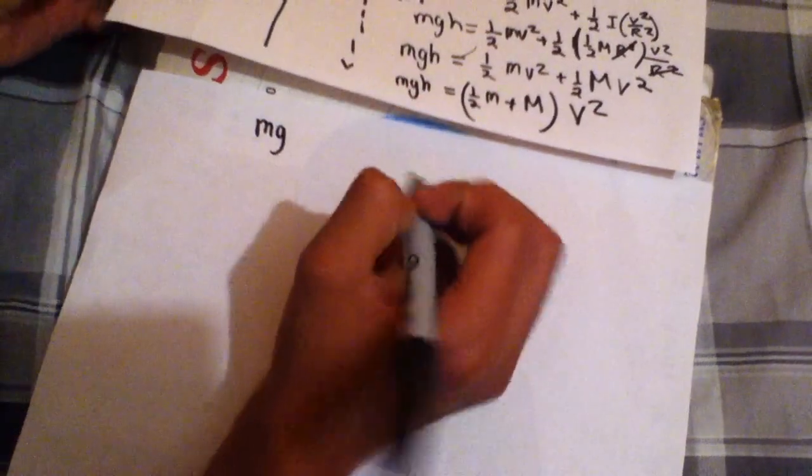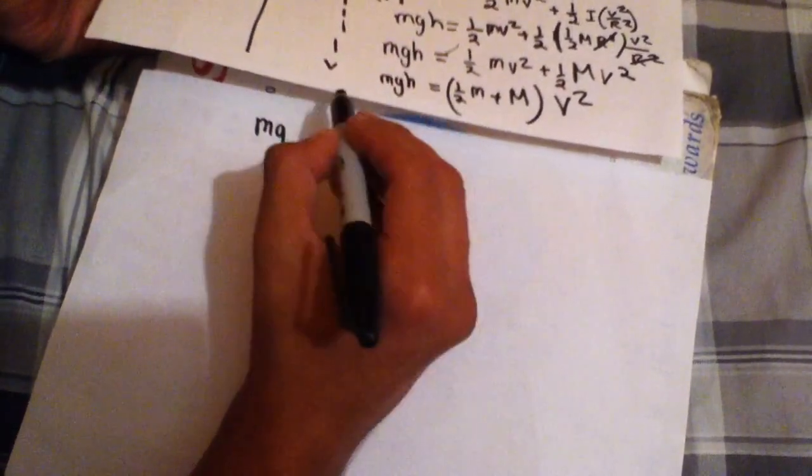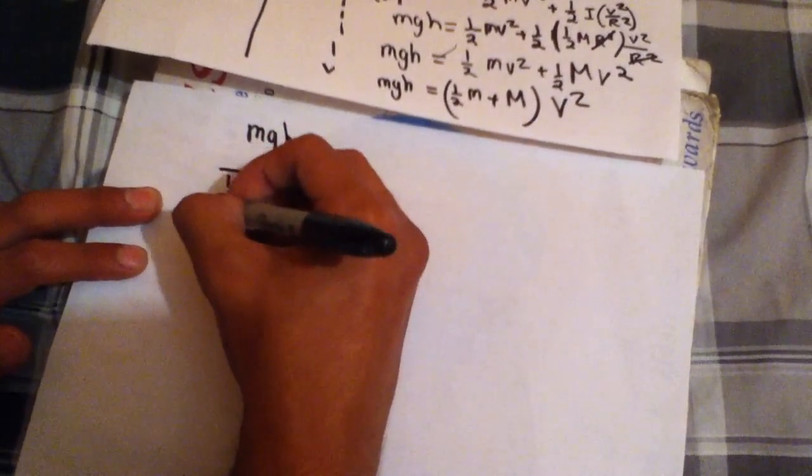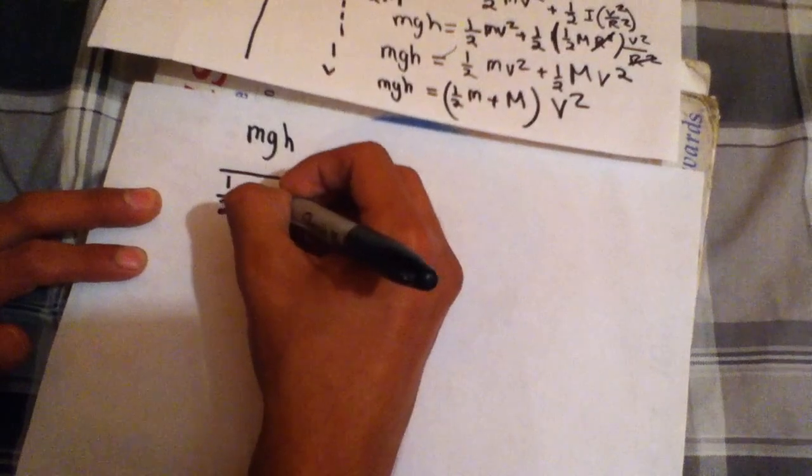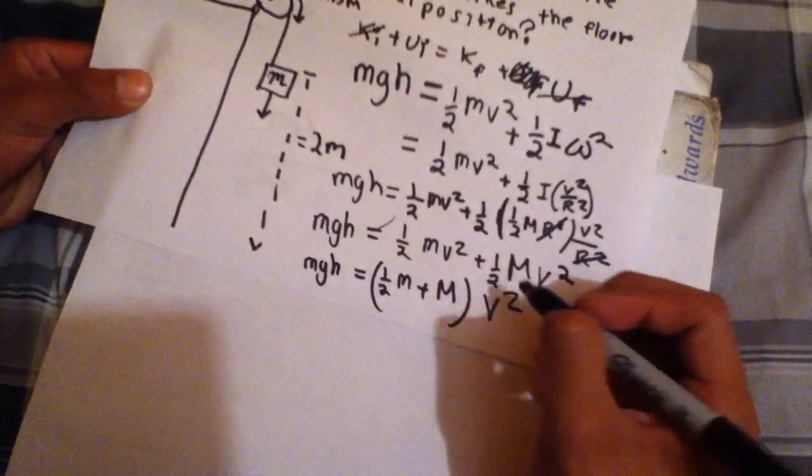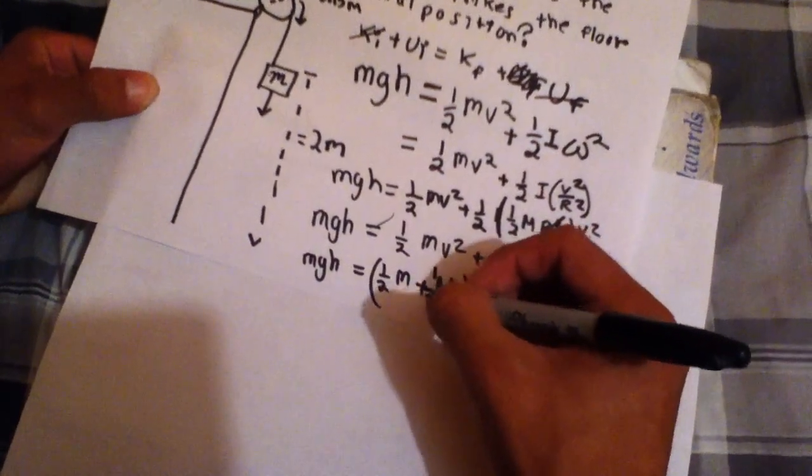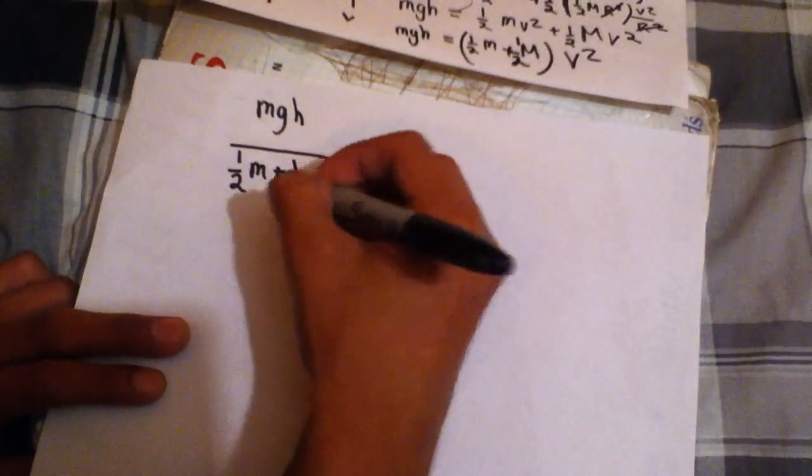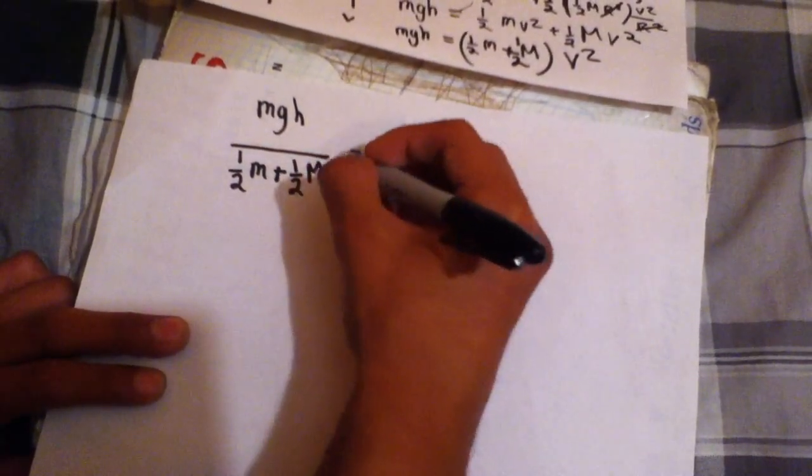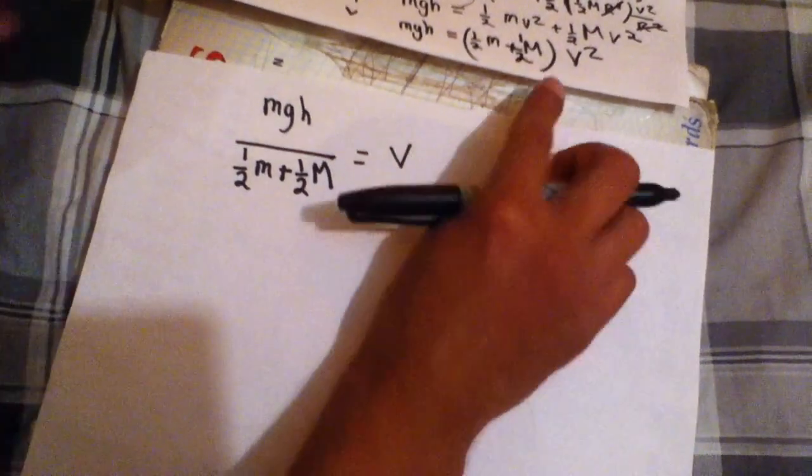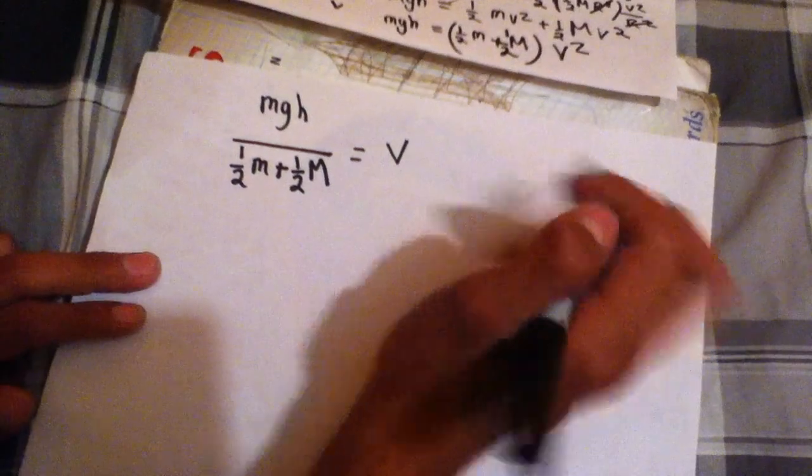And now I'm gonna move this over here. So then you get MGH, and then you divide by one half. And hopefully you picked up my mistake. I forgot the one half. And since it's V squared, I'm gonna take the square root of this whole thing.